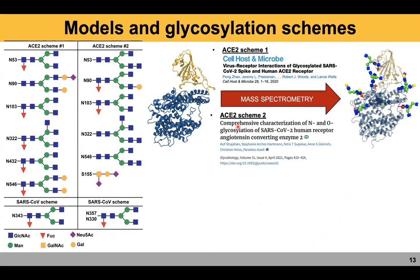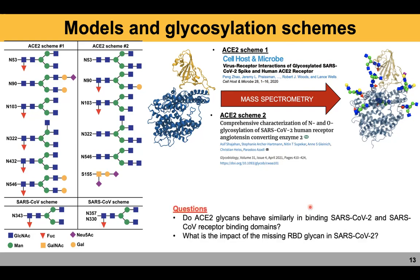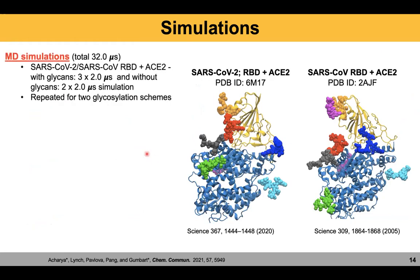A major challenge in this field is that glycosylation patterns vary widely depending on age, ethnicity, blood group, and many other environmental factors — even between different cell lines used to express the protein. We used two different glycosylation schemes, both based on mass spectrometry studies done at the University of Georgia in different cell lines. We performed two-microsecond simulations for each system, repeated for both glycosylation schemes, with two or three independent replicas each.